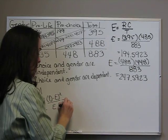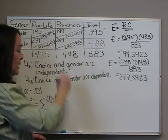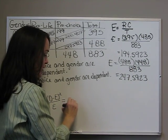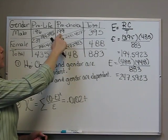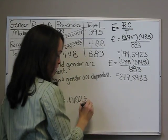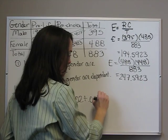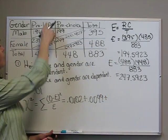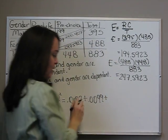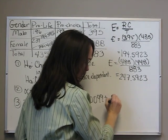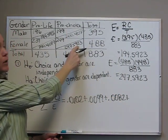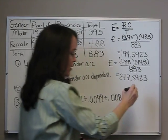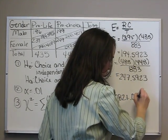When we do that, for the male pro-life, we get a chi-squared value of 0.0102. For the pro-choice male, we get 0.0099. For the pro-life female, we get 0.0082. And for the pro-choice female, we get 0.0080.